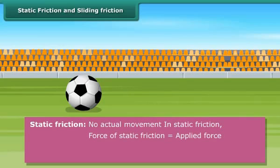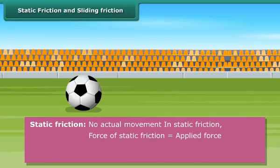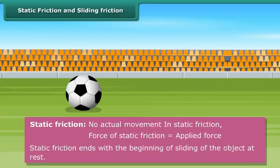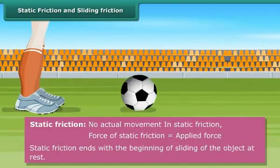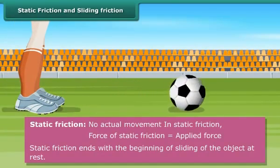There is no actual movement of the body in static friction. The force of static friction is equal to the applied force. Static friction ends with the beginning of sliding of the object at rest.